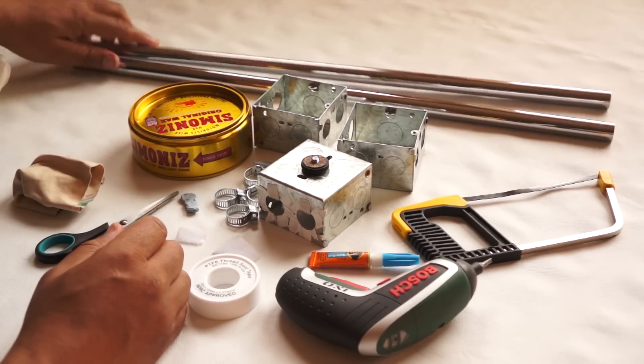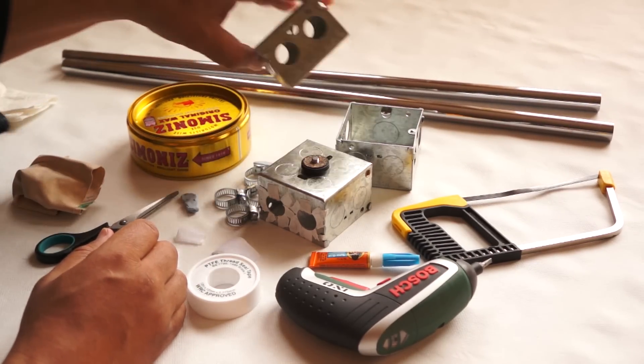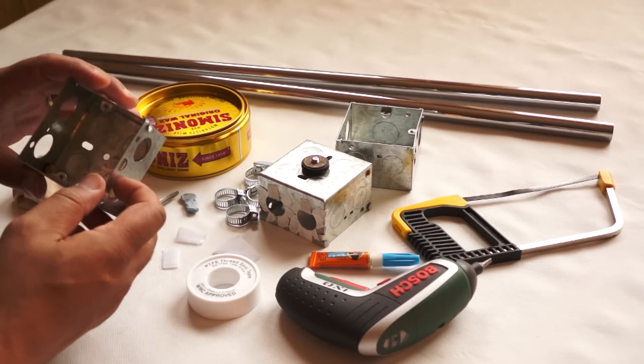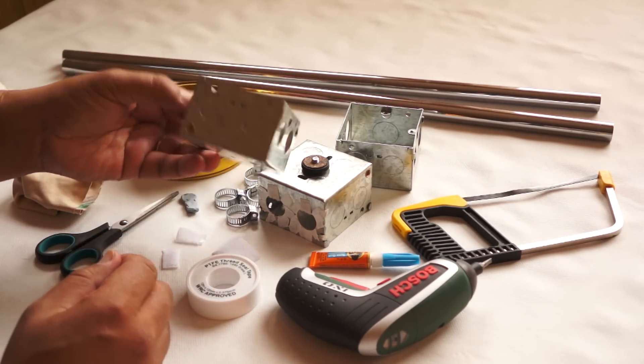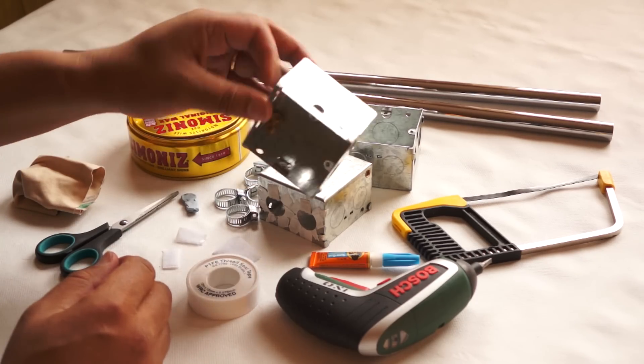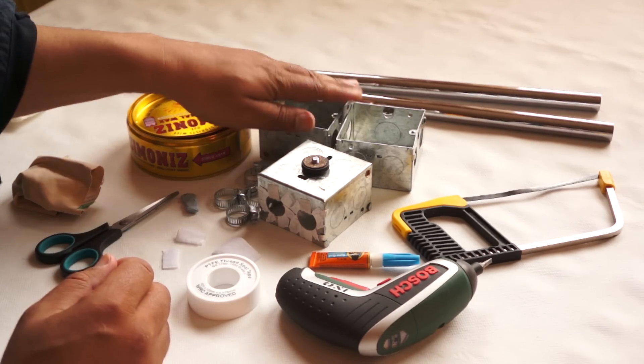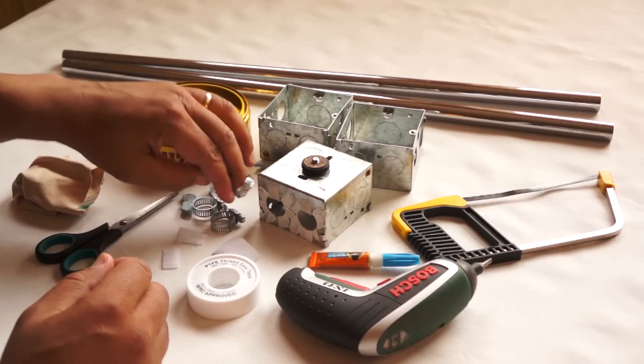Three quarter inch. Three of these conduit boxes, which are the boxes they use for electrical parts in different places. You can get them in plastic, here they're in metal. And four circlips.